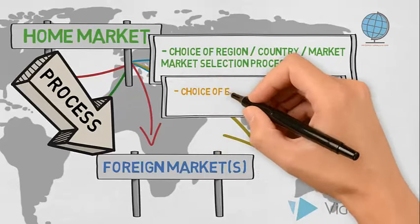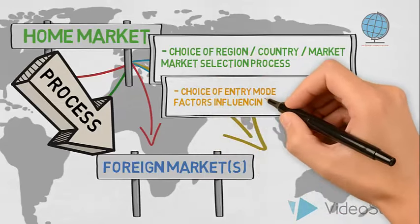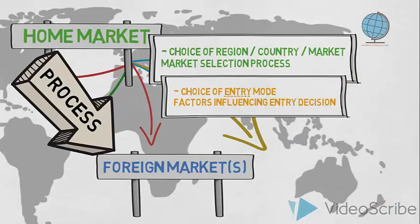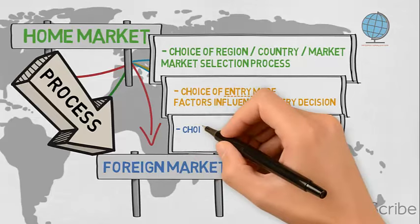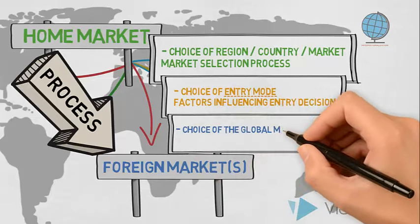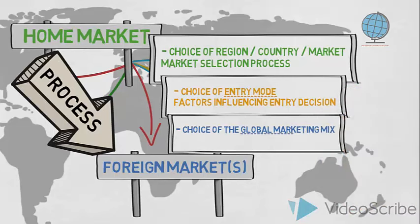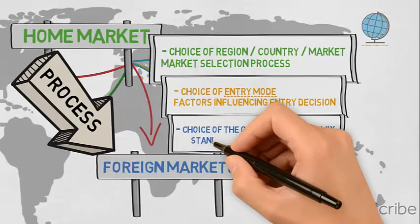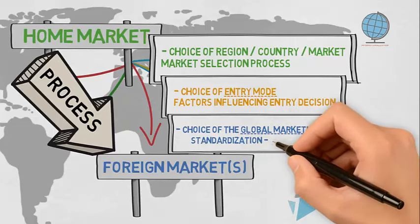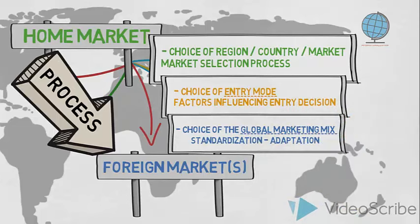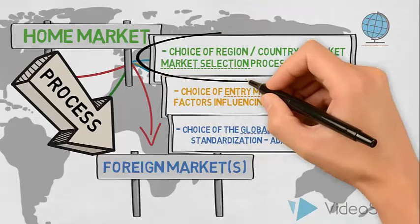Secondly, we would need to address how to organize the entry to the foreign market, discussing which entry mode to use, as many factors will influence our decision. Ultimately, we would define our marketing mix — the four or the seven P's — for the foreign market. The marketing mix we use on foreign markets may vary from the one we use on the home market, and we would address issues regarding standardization and or adaptation of the marketing mix.